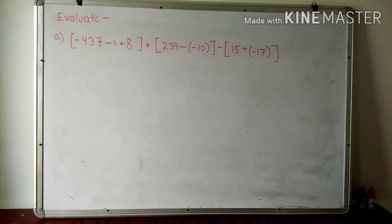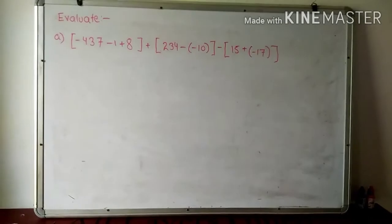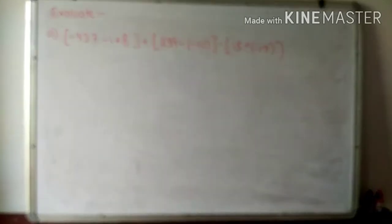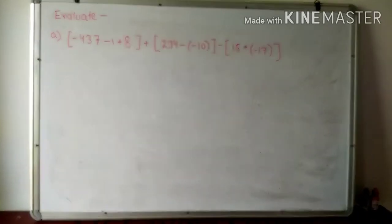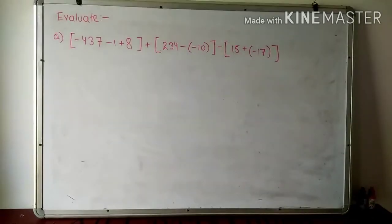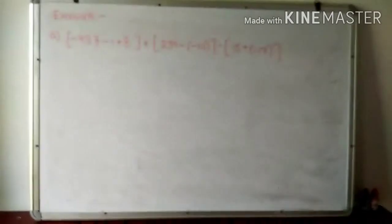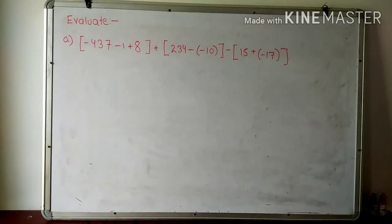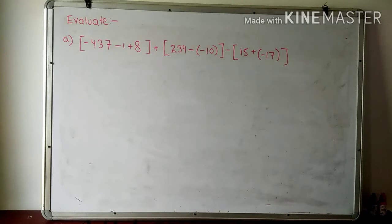Good morning students. Today we are going to solve some exercises from the chapter on integers. I am going to select some questions which students may find problematic while solving. The first question I have selected is from the evaluate topic, and the question is: minus 437 minus 1 plus 8 plus 237 minus minus 10 minus square bracket 15 plus common bracket minus 17 closing square bracket.